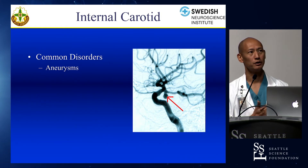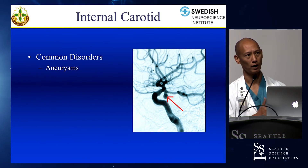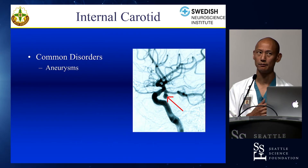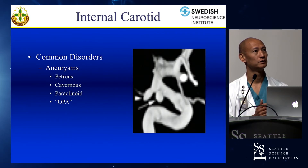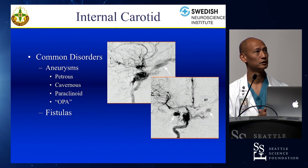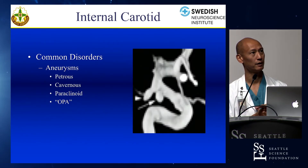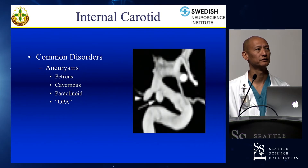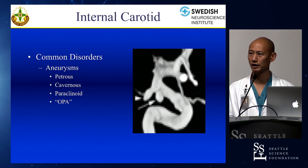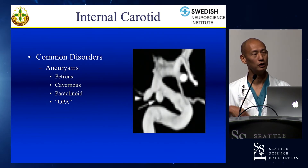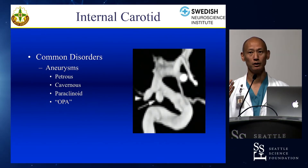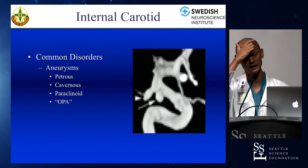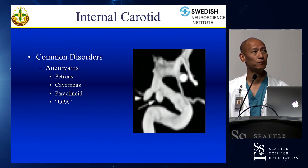Posterior communicating aneurysms can arise anywhere along the segment where the PCOM arises from the ICA, and can also arise from the stem of the posterior communicating itself.